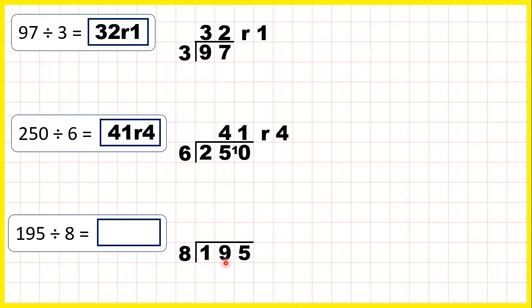Now 195 divided by 8. Again, we're going to need to take the first two digits together, because 1 is less than 8. So 19 divided by 8 is 2 remainder 3. That's because 2 times 8 is 16, but then we need 3 more to get to 19. So now we have 35 divided by 8.